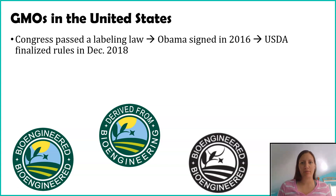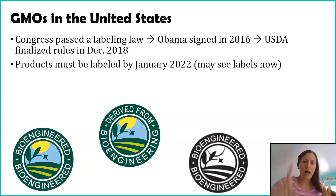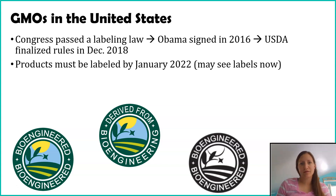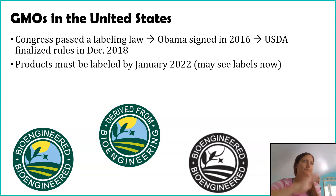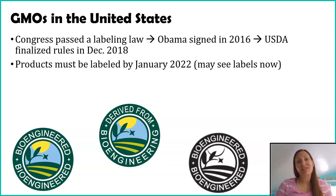The USDA needed to take a couple years to figure out: who needs to label, what exactly needs to be labeled, what does that label look like, what does it need to say, and when do they have to have it labeled by. They made these rules in 2018, then gave companies three years to comply. So in December 2018 the USDA told companies like Kraft — on your mac and cheese boxes you're going to need a label, and you have three years to start planning for this. Some companies have already started putting it on their materials.